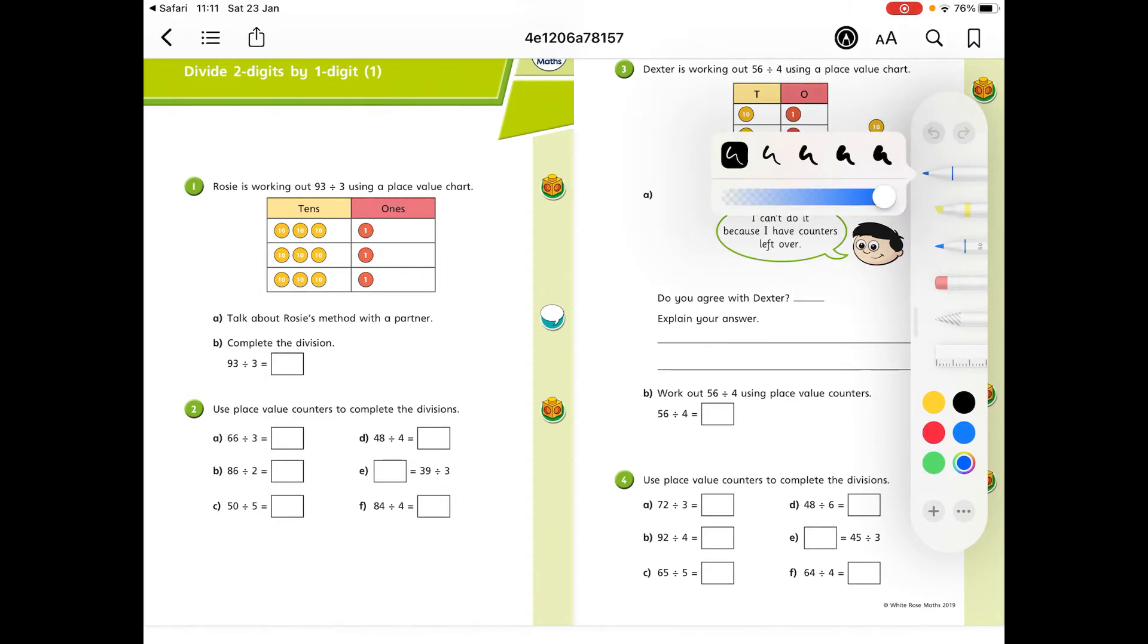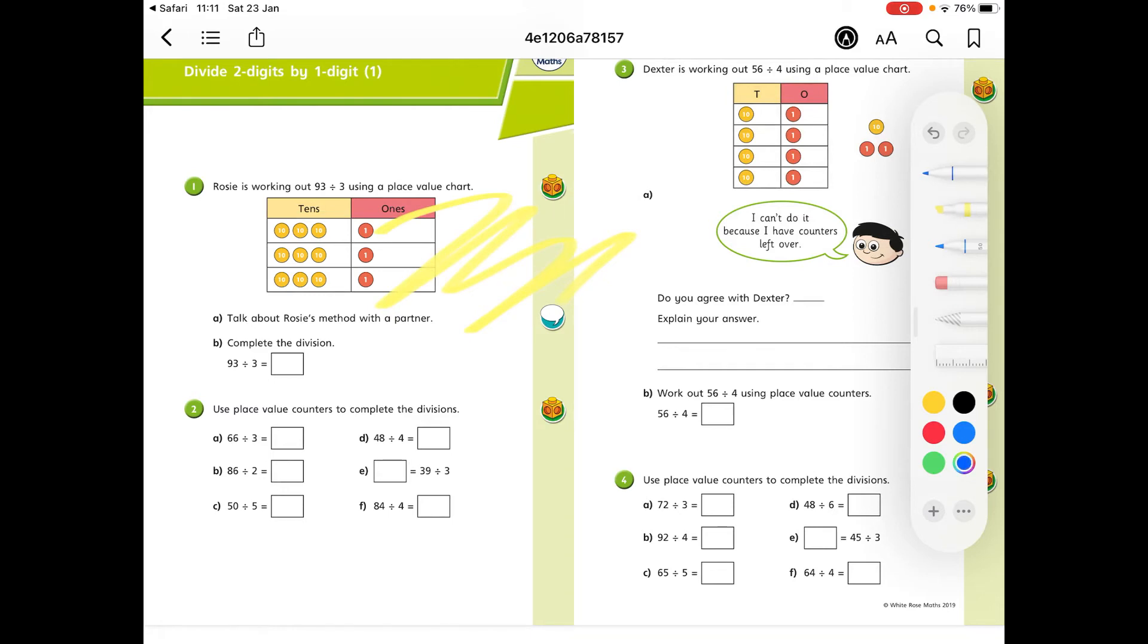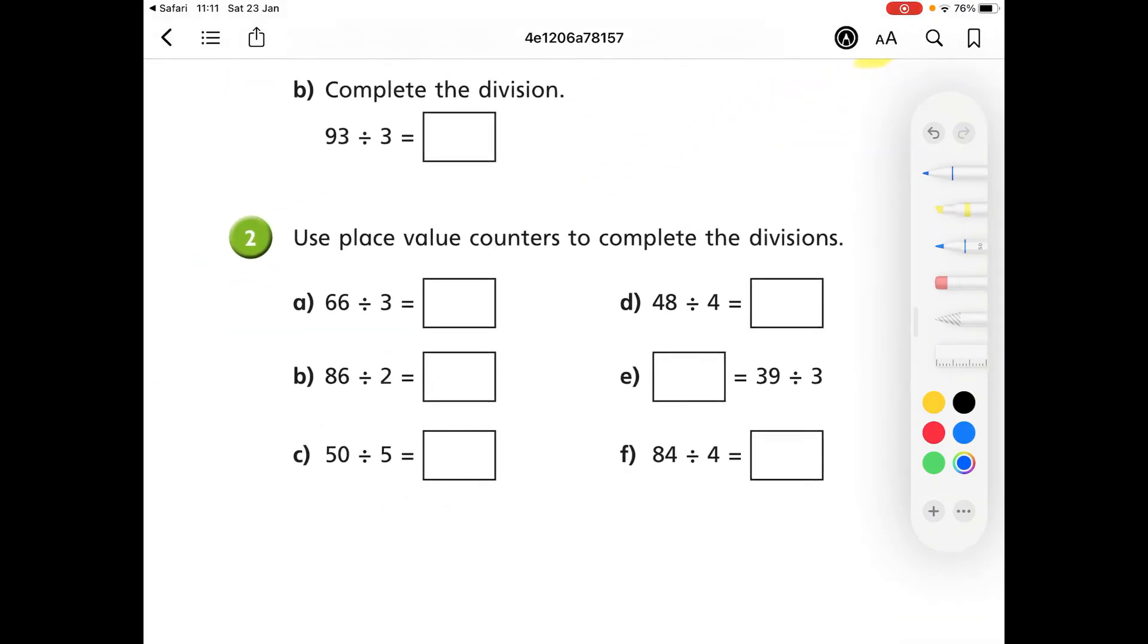Pick the type of pen you want, so you can do highlighting if you want and you can draw on the screen. Pick the pen, you can zoom in and write in there. I'm just writing numbers, I'm not getting these right.